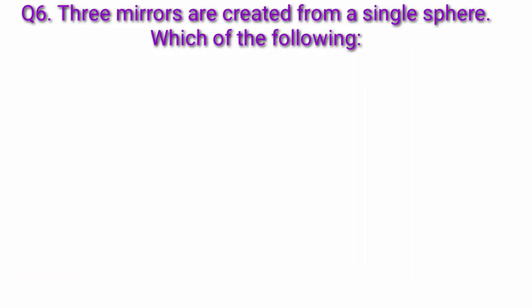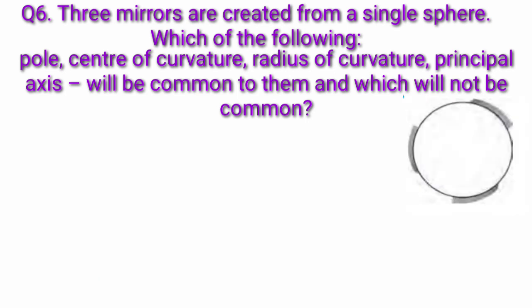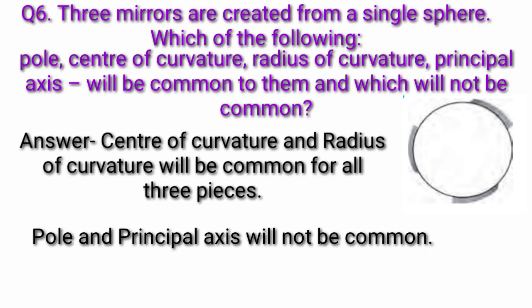Question 6: Three mirrors are created from a single sphere. Which of the following — pole, center of curvature, radius of curvature, principal axis — will be common to them and which will not? Answer: Center of curvature and radius of curvature will be common for all three pieces. Pole and principal axis will not be common.